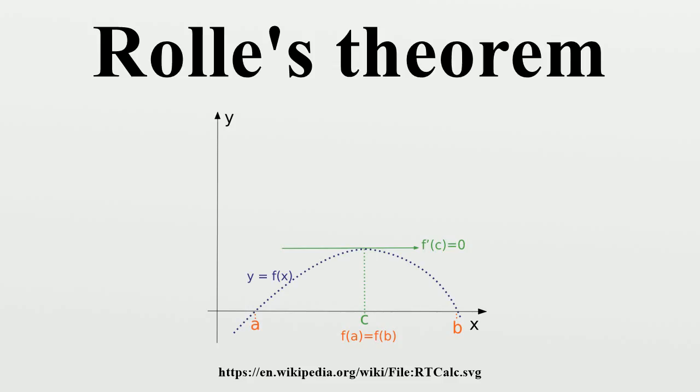Proof of the generalized version: Since the proof for the standard version of Rolle's theorem and the generalization are very similar, we prove the generalization. The idea of the proof is to argue that if f(a) equals f(b), then f must attain either a maximum or a minimum somewhere between a and b, say at c, and the function must change from increasing to decreasing at c. In particular, if the derivative exists, it must be zero at c.